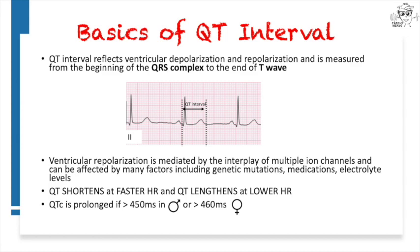Many factors, including genetic mutations, medications, and electrolyte levels, can influence ventricular repolarization and thus the QT interval through effects on ion channels and ion currents. The QT interval shortens at faster heart rates and lengthens at lower heart rates. Normal cardiac repolarization adapts to heart rate to ensure that with increasing heart rate, the myocardium is completely repolarized before the next depolarization wave enters. This prevents incomplete repolarization and the subsequent possibility of re-entrant tachycardia.